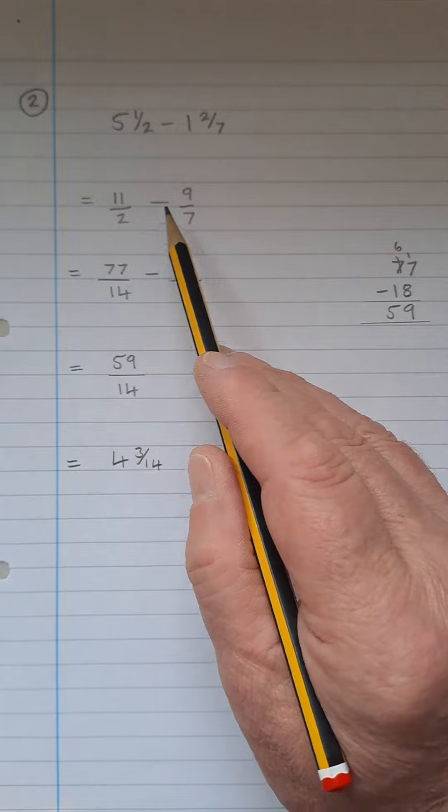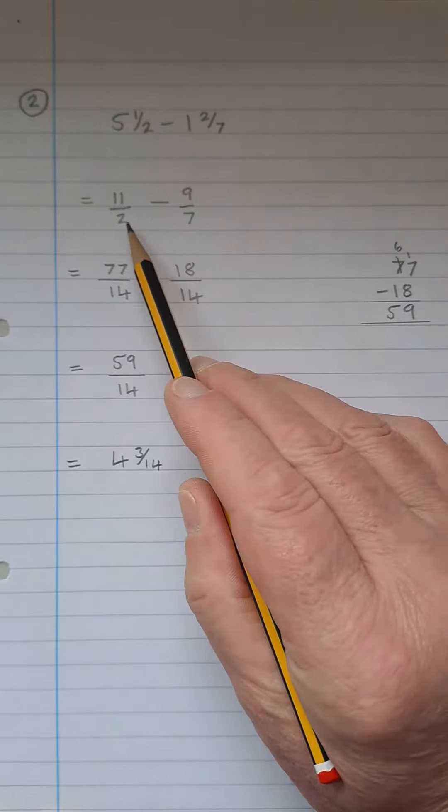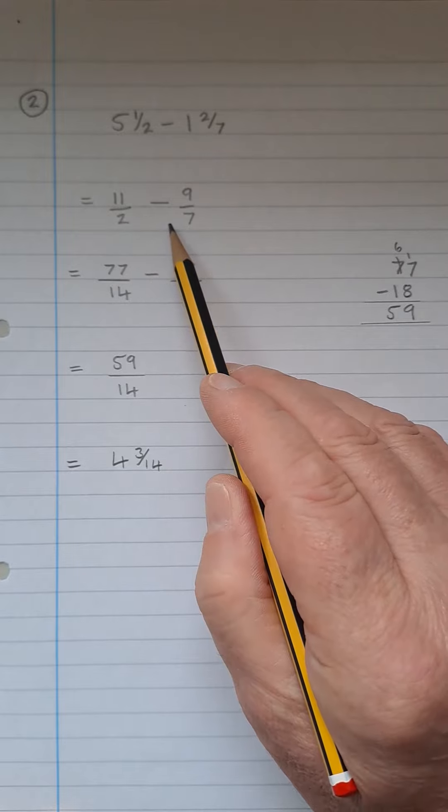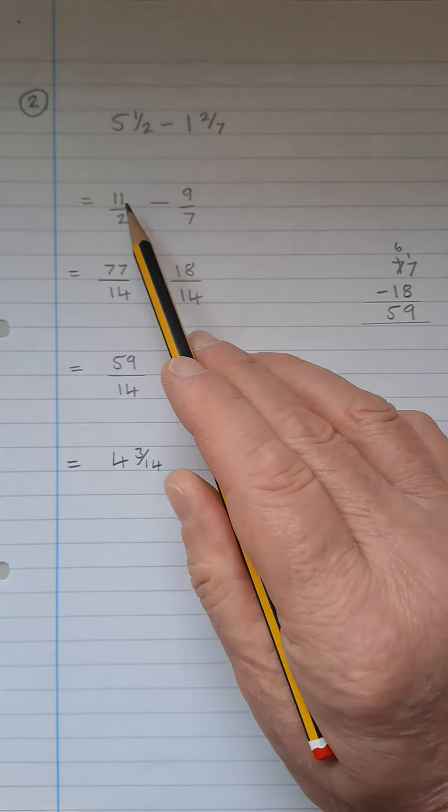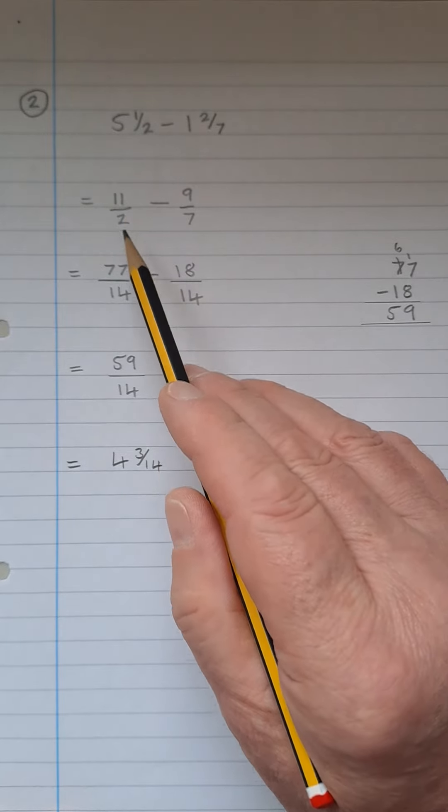So we need to make the common denominators now the same because you can't add or subtract fractions that have got different numbers down here. So the easy thing to do is to multiply this top and bottom by 7.